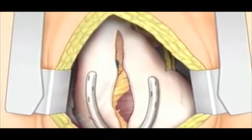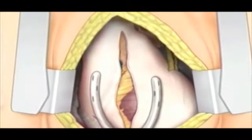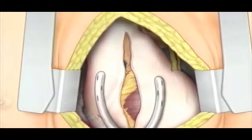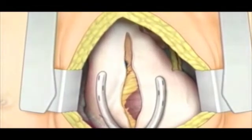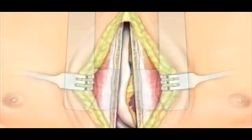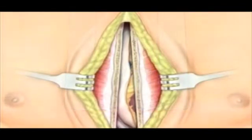Chest tubes are placed in the mediastinum and the pleural space to drain blood from around the heart and lungs. Any excessive drainage from the chest tubes suggests continued bleeding, which may require re-operation to manage. No drainage may suggest an obstructed tube, which may result in cardiac tamponade and/or pneumothorax, which may be lethal.